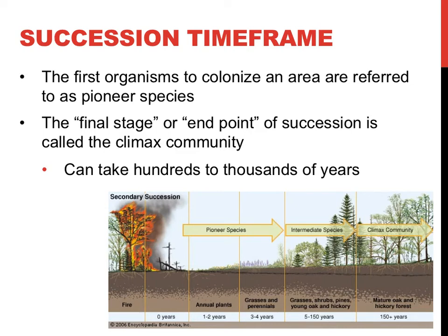Pioneer species — those that grow very quickly and colonize an area rapidly — usually establish themselves in an area first. There are usually a series of other organisms that would take over the community, until the community reaches its final development, or its end point, referred to as the climax community. While secondary succession can usually take place within 200 years or so in most biomes, primary succession can take thousands of years.